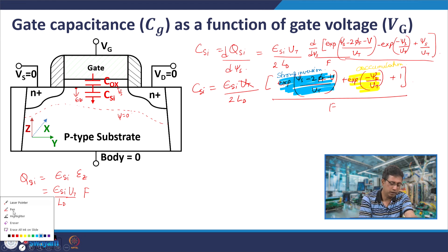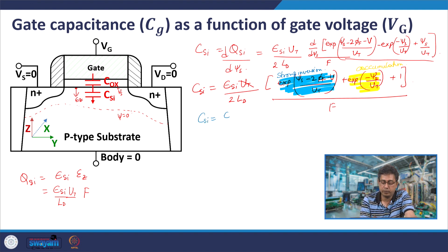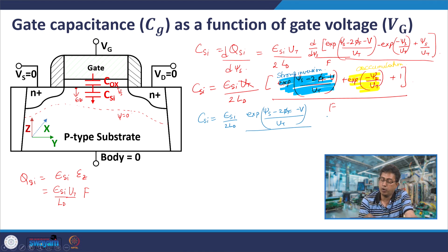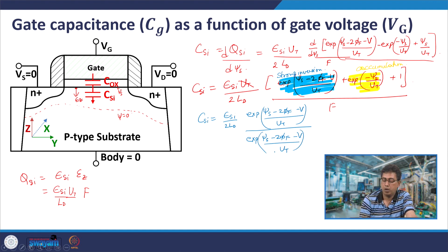Let us see how the silicon capacitance behaves in the three regions. In strong inversion, the relevant expression reduces to an exponential in (chi_s minus 2*phi_f minus v) divided by u_t, divided by the value of f in strong inversion. In strong inversion, f also becomes exponential. The second and third terms are negligible; it is only the first exponential term that is important.